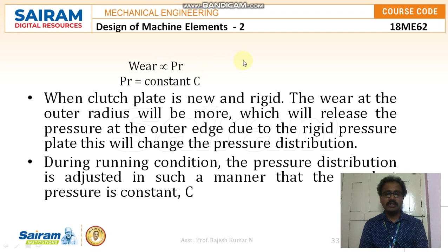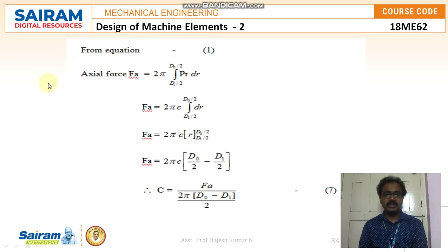When the clutch plate is new and rigid, the wear at the outer radius will be more, which will relieve the pressure at the outer edge due to the rigid pressure plate, changing the pressure distribution. During running condition, the pressure distribution is adjusted such that the product of pressure p*r is constant c. From this, the axial force Fa = 2*pi * integral from di/2 to do/2 of p*r*dr.